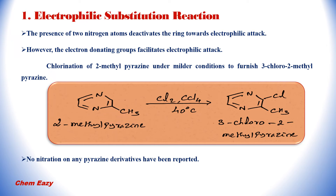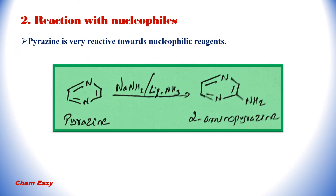No nitration of any pyrazine derivative has been reported. Next is the reaction of pyrazine with nucleophiles. Pyrazine is very reactive towards nucleophilic reagents. For example, pyrazine on reaction with sodium amide in liquid ammonia produces the second-position nucleophilic attack product, that is 2-aminopyrazine.